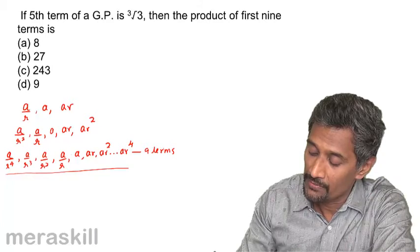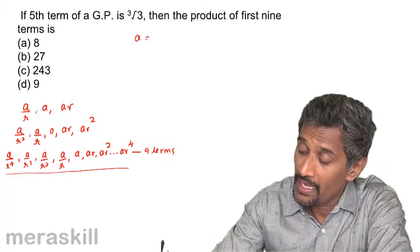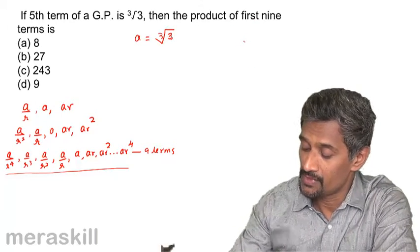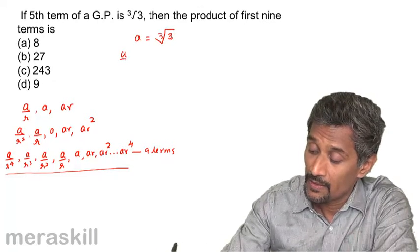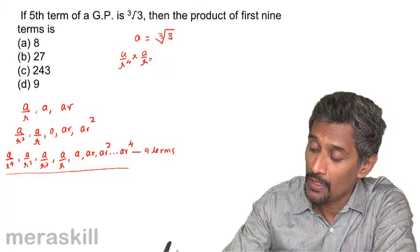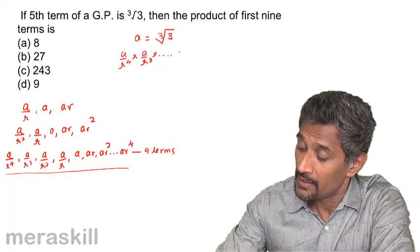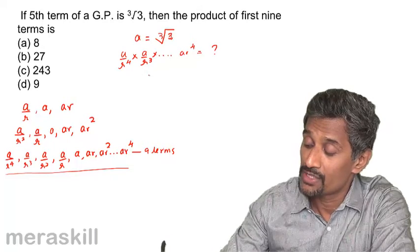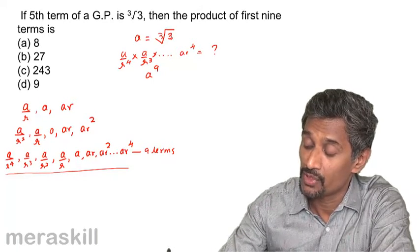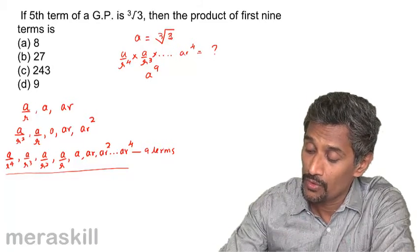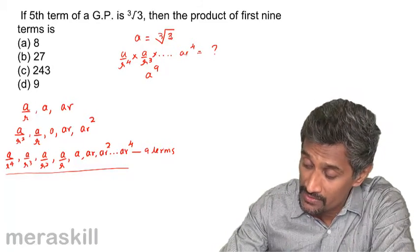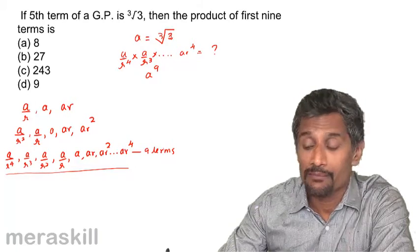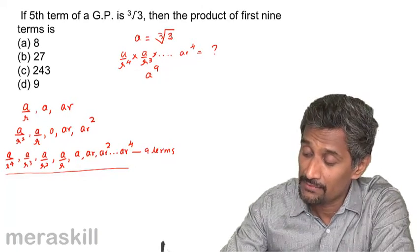With the nine terms set up this way, the fifth term is a, which equals ∛3. When we multiply all nine terms — a/r⁴ × a/r³ × ... × ar⁴ — all the r terms cancel: r⁴ and 1/r⁴ cancel, r³ and 1/r³ cancel, and so on. We are left with a multiplied by itself nine times, giving a⁹.